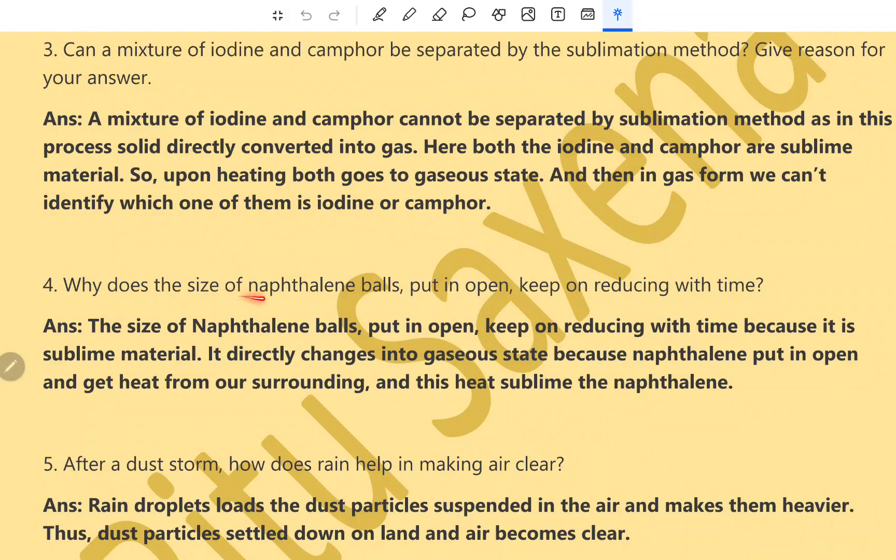Question number 4. Why does the size of naphthalene balls put in open keep on reducing with time? The size of naphthalene balls put in open keep on reducing with the time because it is sublime material. It directly changes into gaseous state because naphthalene put in open get heat from our surrounding. And this heat sublime the naphthalene balls.